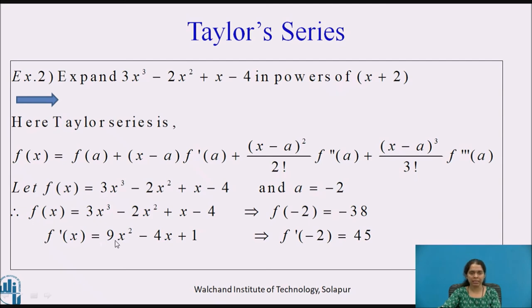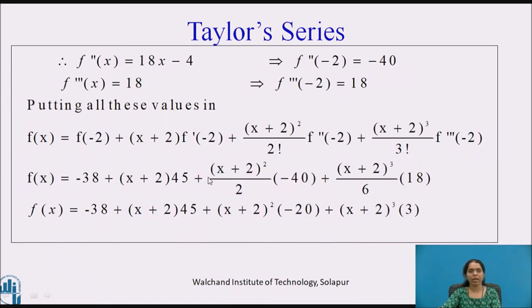Let us calculate the required derivatives from f(x) = 3x³ − 2x² + x − 4. The first derivative f'(x) = 9x² − 4x + 1. With a = −2: f(−2) = −38, and f'(−2) = 45. The second derivative f''(x) = 18x − 4, and the third derivative f'''(x) = 18 (a constant). Therefore, f''(−2) = −40 and f'''(−2) = 18.